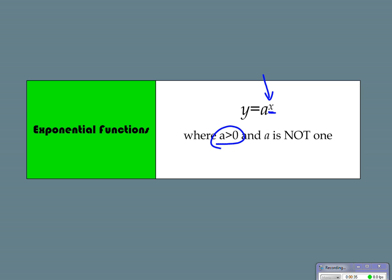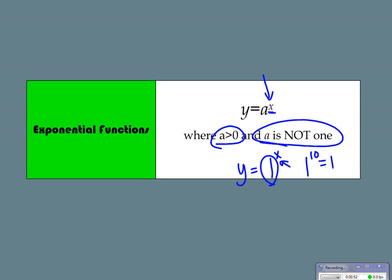Note a couple things. One, a is bigger than zero because a negative number would act kind of weird with an exponent. And a is not 1 — here's why: because if I have y equals 1 raised to the x, it doesn't matter what x is. My answer is always going to be 1. Like, 1 to the 10th is still 1, 1 to the 232nd is still 1. So a has to be slightly bigger than 1.